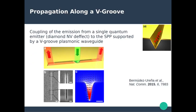The first example is a v-groove plasmonic waveguide. This is done on a metallic film where we can etch away a very long groove — called v-groove because of its actual shape. This cross-section shows how the electromagnetic field of the surface plasmon polaritons of this metallic surface is confined inside the groove.